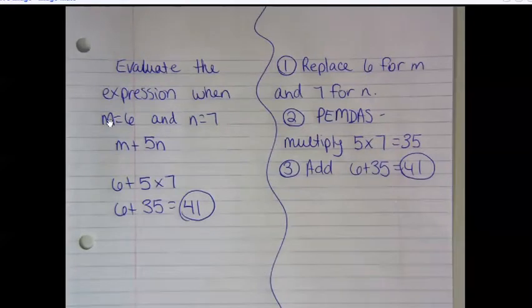Evaluate the expression when M equals 6 and N equals 7 for M plus 5N. First, we need to replace the 6 for M and the 7 for N, so now we have 6 plus 5 times 7.